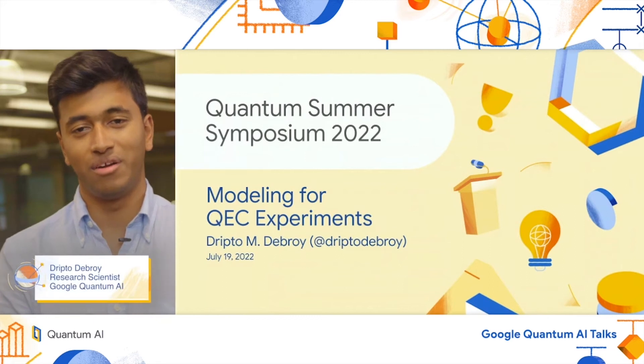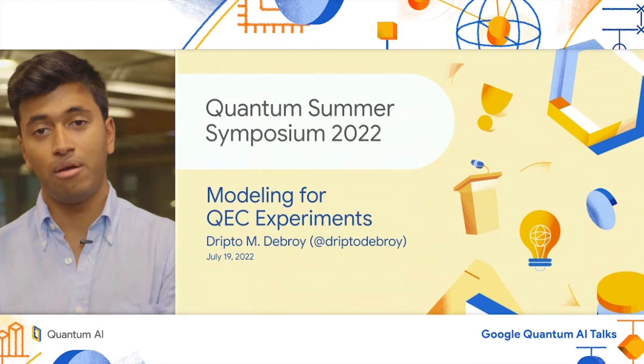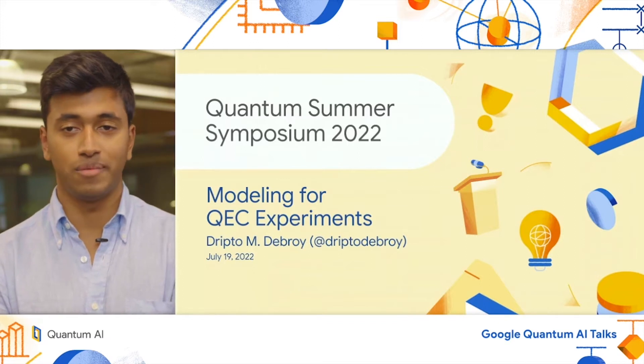Hi, I'm Drip DeBroy, a research scientist on the Google Quantum AI team, and I'm going to explain to you how we model our systems and the value we extract from simulation.